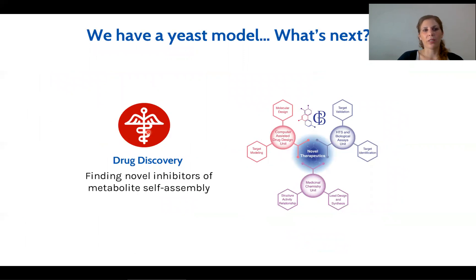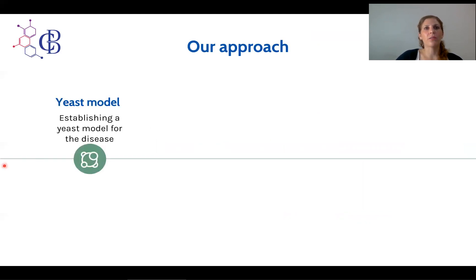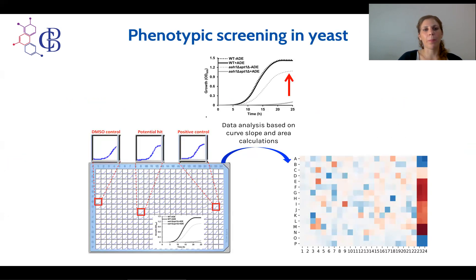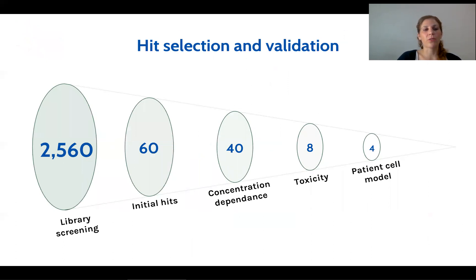One direction we pursued was drug discovery. Now that we had the yeast model, we decided to pursue drug discovery and try to find novel inhibitors for metabolite self-assembly. This study was done in collaboration with the Blavatnik Center for Drug Discovery, a fully integrated center for translational research based at Tel Aviv University. Our approach was to start with the yeast model, go to high-throughput screening, perform optimization when needed, then validation, and finally preclinical validation using a mouse model. We screened a library of 2,560 small molecules and ultimately identified four molecules that were validated in a patient cell model for the relevant disorders related to adenine accumulation. We are now moving into a mouse model.